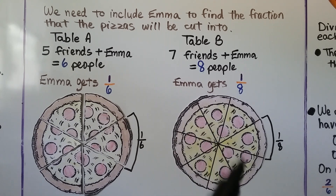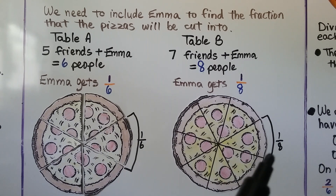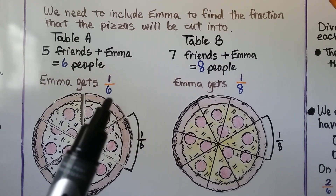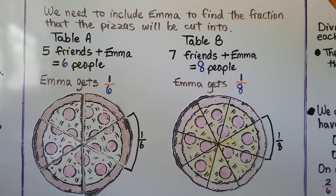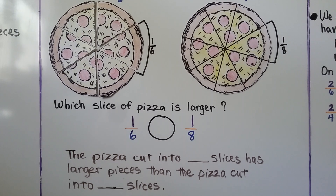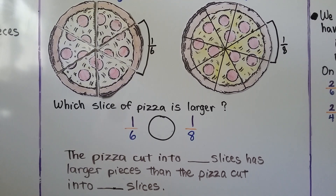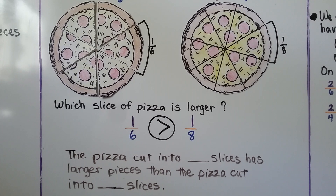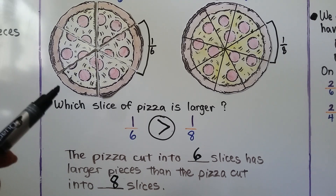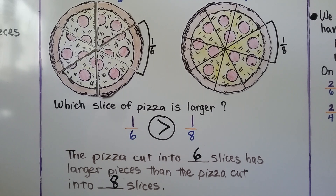This pizza is cut into eight slices, so everyone at the table gets a slice. One-sixth is a larger piece than one-eighth. They have the same numerator, but one-sixth has a lower number for the denominator — it was cut into fewer pieces, making it the larger slice. One-sixth is greater than one-eighth. It was cut into fewer pieces, so each piece was larger. The pizza cut into six slices has larger pieces than the one cut into eight slices. If she sits at that table, she'll have a larger piece and get more.